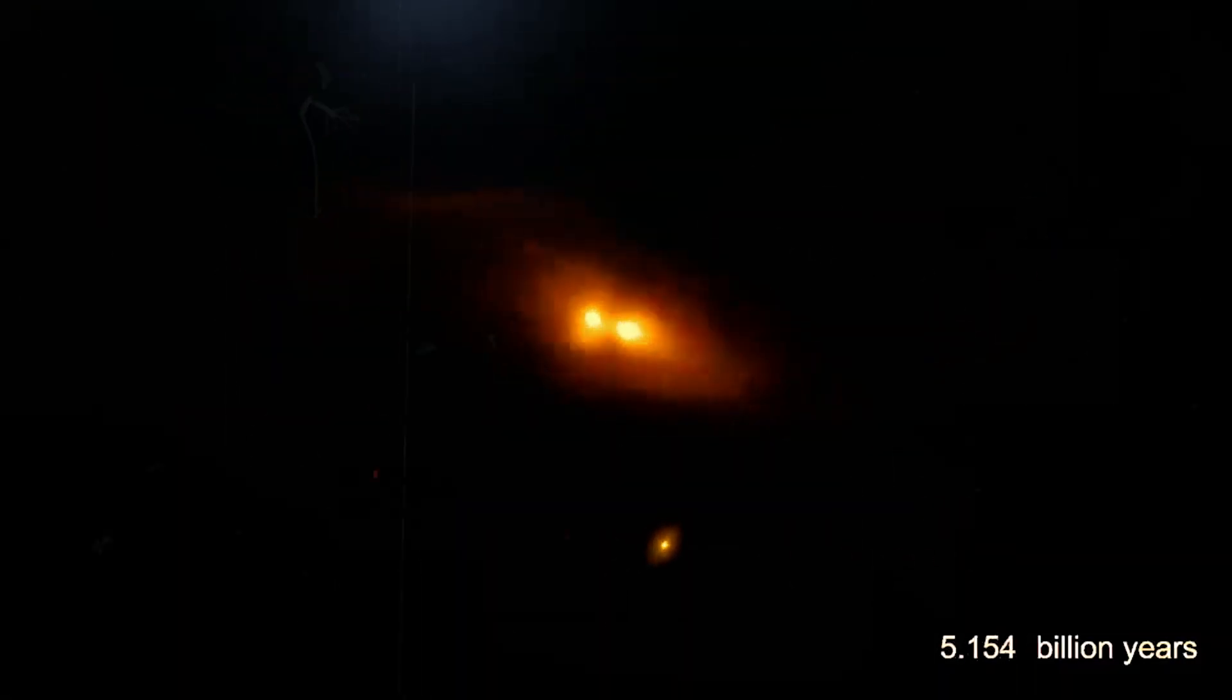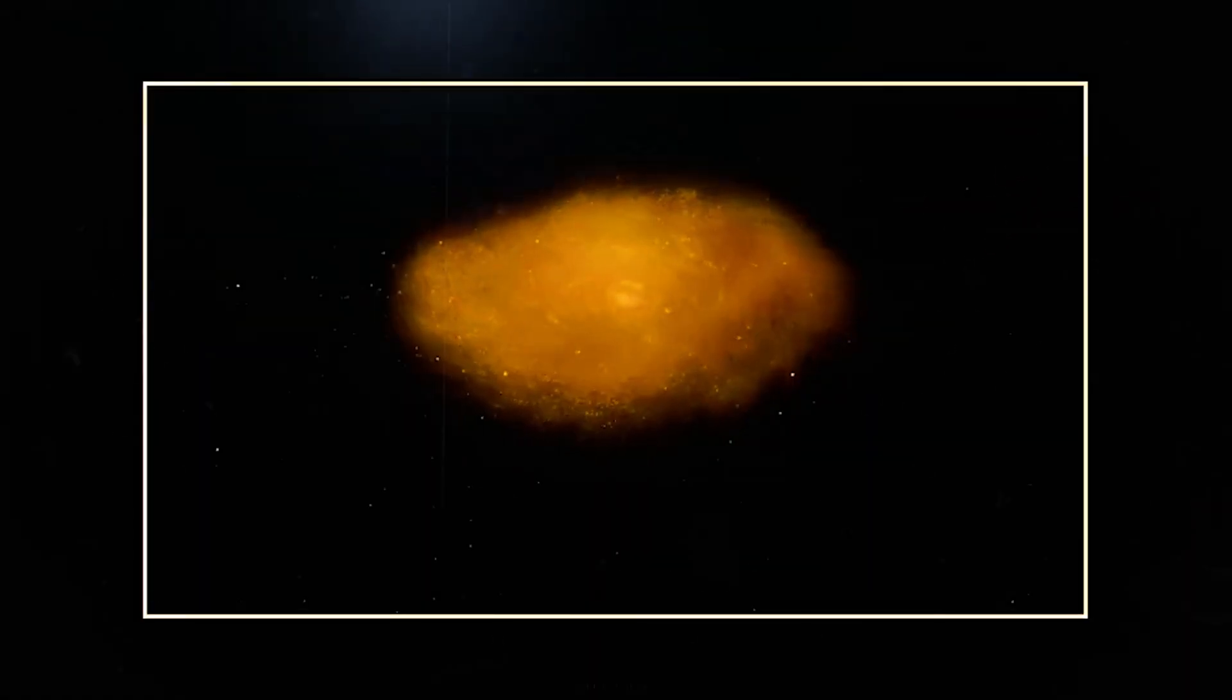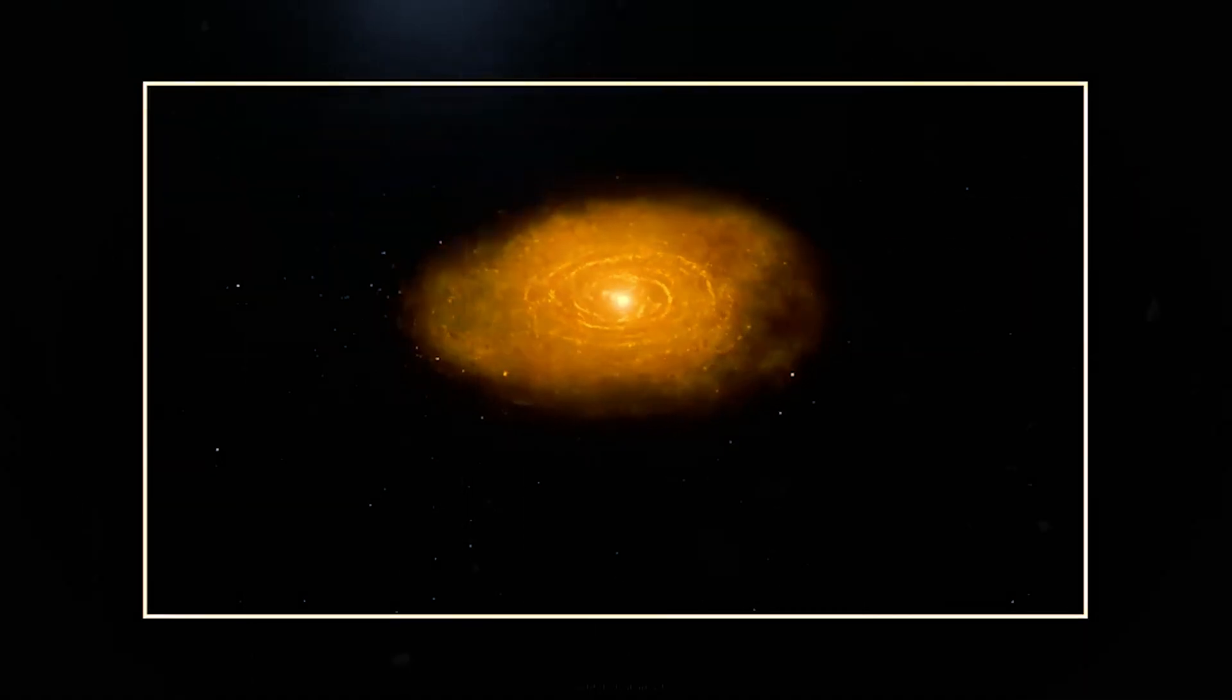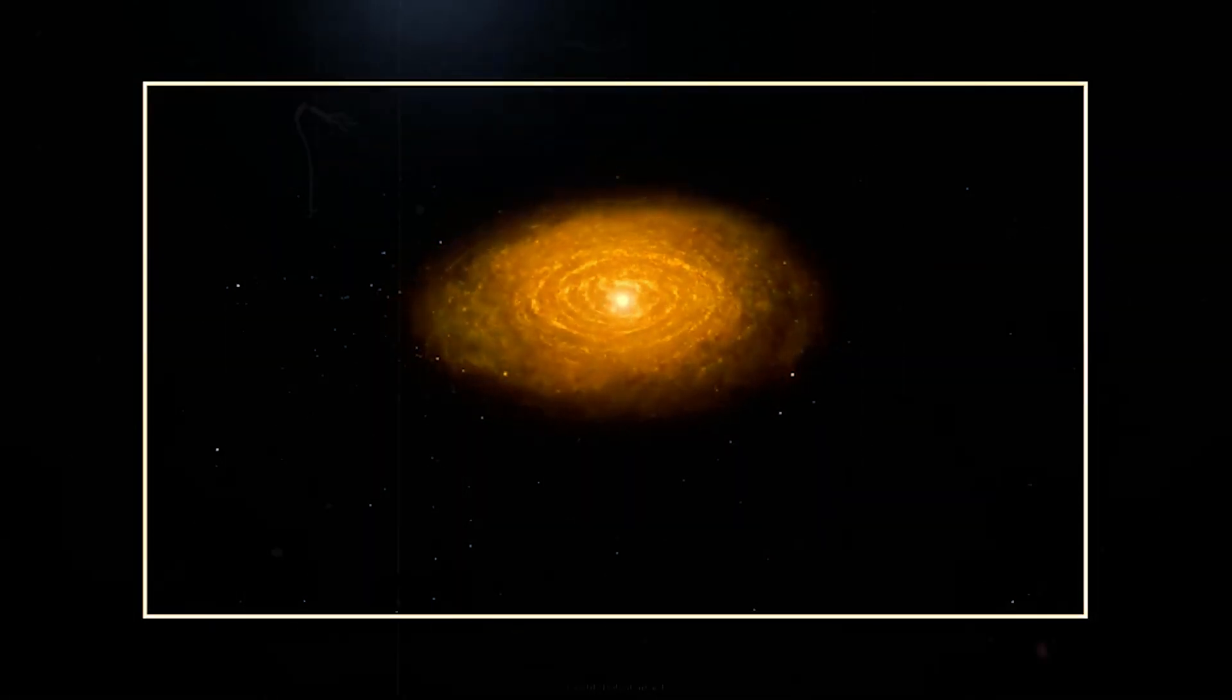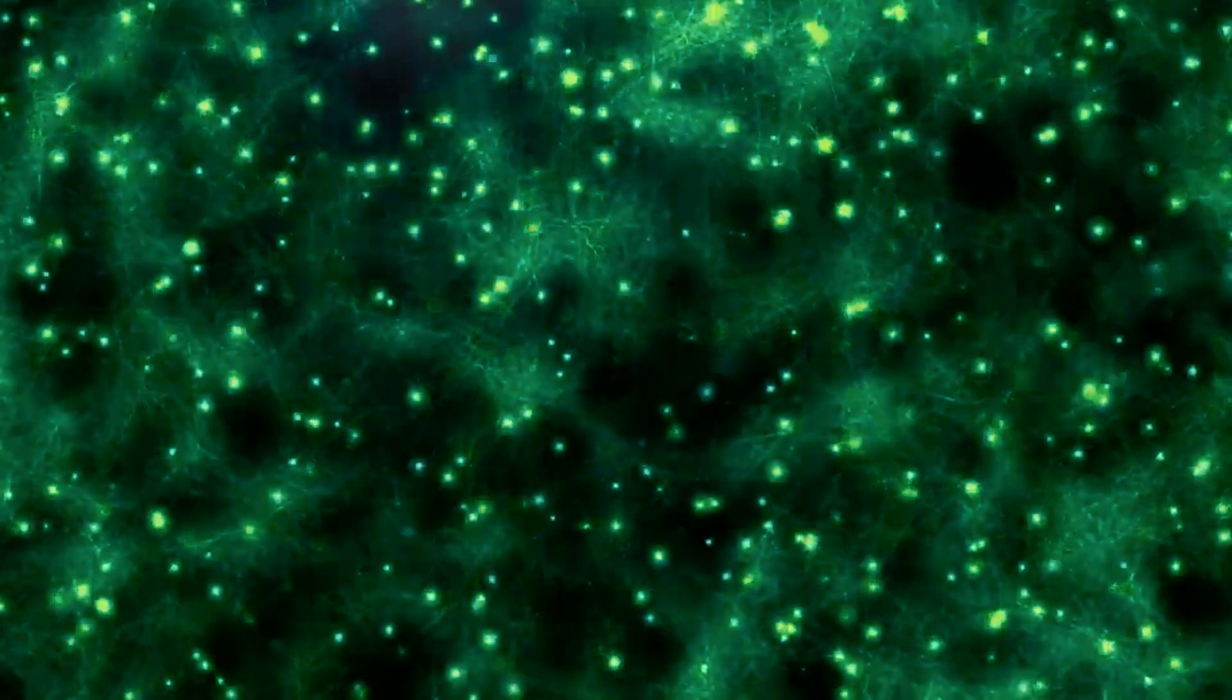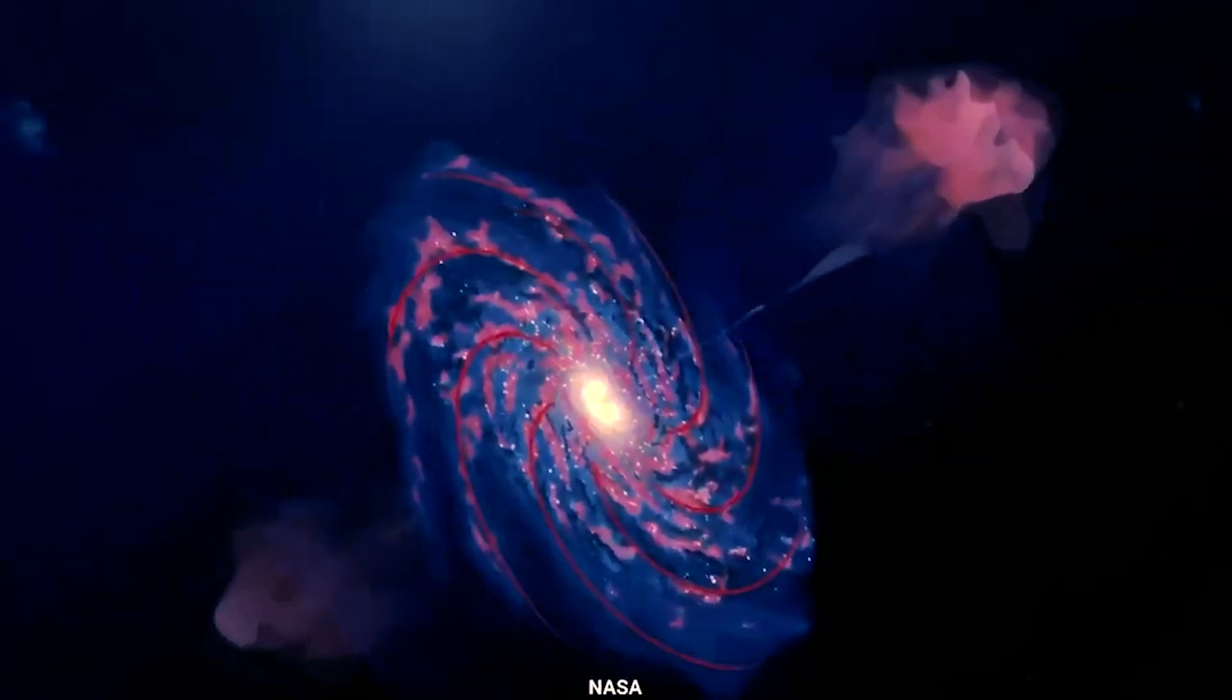These dwarf galaxies then collided with each other to form the type of galaxies that populate today's universe. Now coming back to galaxy ZFUDS 7329, its formation, just like every other primordial galaxy, to be dictated by concentration of dark matter. However, at that early stage of the universe, those crucial dark matter halos wouldn't have had enough time to develop.